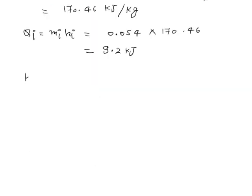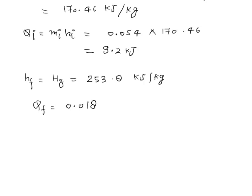The final enthalpy is calculated by putting Q = 1, so it equals the vapor enthalpy HG at 5°C, which is 253.8 kJ/kg. The final heat equals the final mass times the final enthalpy: 0.018 × 253.8 kJ/kg.